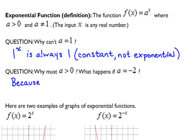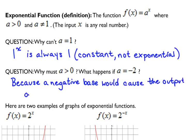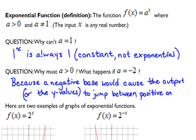That's the reason why your base has to be positive. Because a negative base would cause the output, or the y values, to jump between positive and negative values. And those were just whole numbers that I was plugging in. Don't forget, we can also plug in things like 0.5, 1.5, 2.75. We can plug in other things for x, we just tend to favor the whole numbers.